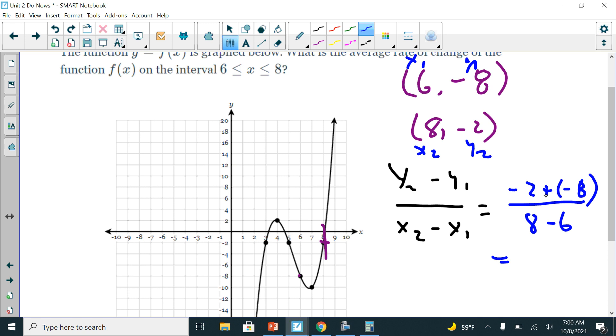So this becomes a positive. So negative 2 plus 8 is 6, and then 8 minus 6 is 2. 6 divided by 2 is 3. So final answer is 3. I could have also gotten that just to confirm. This is going to help you on the next one. Let's go ahead and do this in some red. So I have 6, negative 8, which is right there. 8, negative 2, which is right there. And I'm going to draw this line between them, and I'm going to do rise over run.